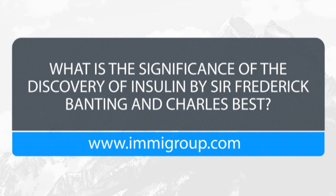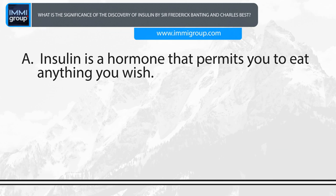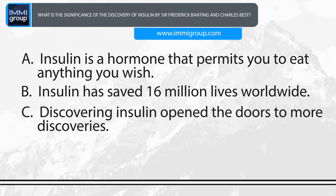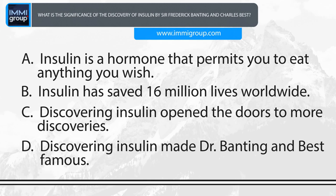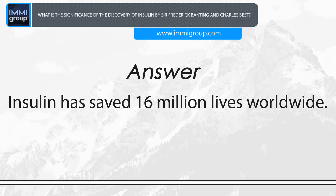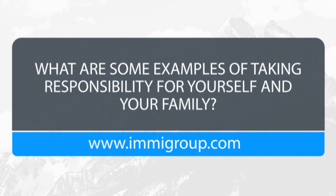What is the significance of the discovery of insulin by Sir Frederick Banting and Charles Best? A. Insulin is a hormone that permits you to eat anything you wish. B. Insulin has saved 16 million lives worldwide. C. Discovering insulin opened the doors to more discoveries. D. Discovering insulin made Dr. Banting and Best famous. Answer: Insulin has saved 16 million lives worldwide.